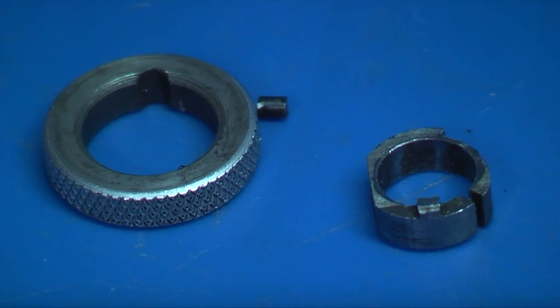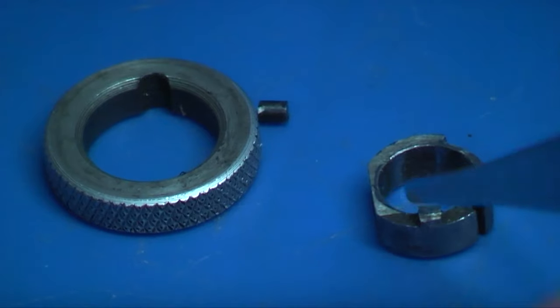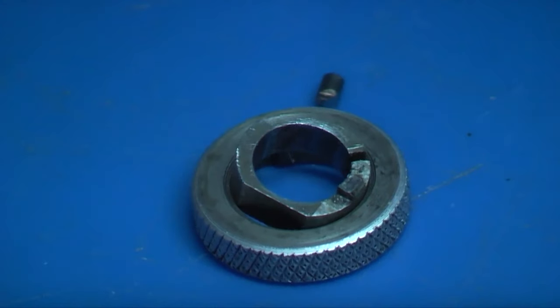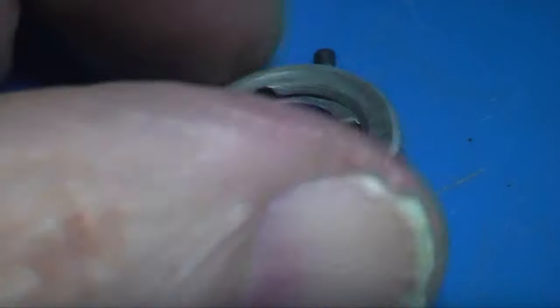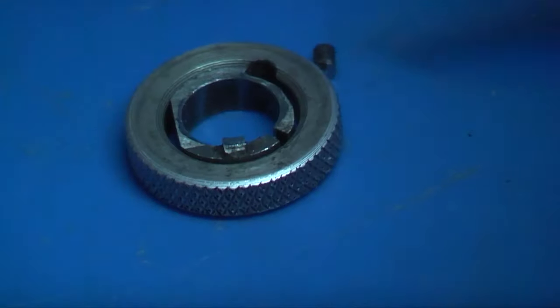Those are the three parts to the spindle lock. This part fits inside and then you have a little dowel.